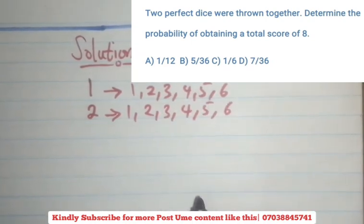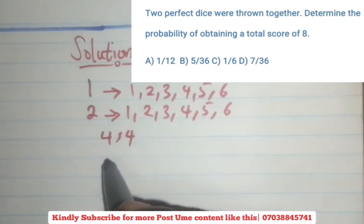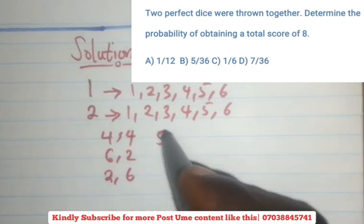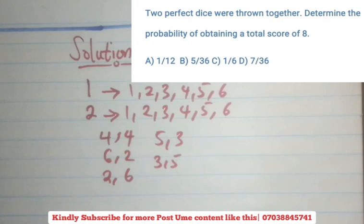Now we need a total score of 8. You need combinations that can give you total score of 8. So you can have 4, 4. 4, 4 will give us 8. You can have 6, 2, 2, 6, 5, 3 and 3, 5. These are the combinations that will give us a total score of 8.